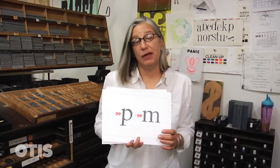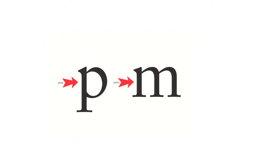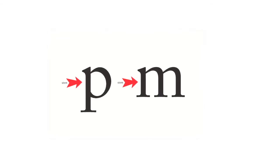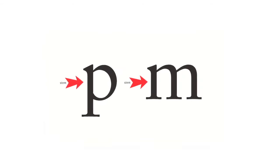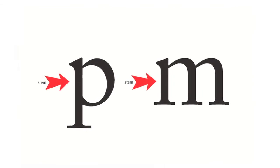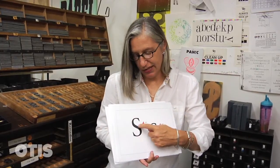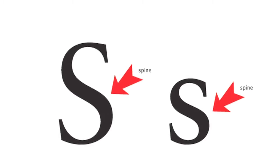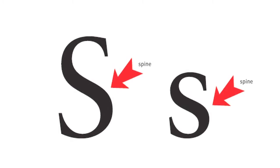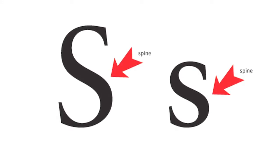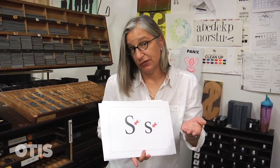A stem is the main stroke of a letter. If you imagine yourself drawing the letter form, it's generally the first one that you make. It's almost always a vertical stroke and it's referred to as a stem — that's on straight letters. On curved letters, the stem is then called a spine, and it's the thicker portion of a curved letter. So on a curved letter, the stem is called a spine.